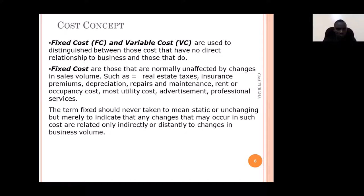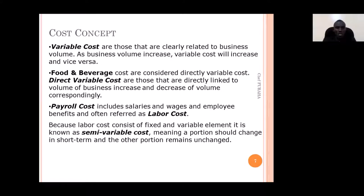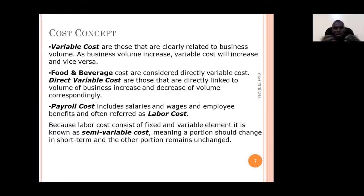Variable costs are those costs that are related to the business volume — they change with the change in business volume and vice versa. An example of variable costs is food cost. Overheads can also sometimes change with the change in business volume. If the business volume increases, variable costs are also going to be affected.